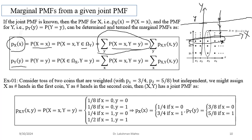Joint probability of events A and B can be computed via the multiplication rule: P(A∩B) = P(A)·P(B|A). In terms of random variables, event A corresponds to X observing value small x, and event B to Y observing value small y. The intersection is replaced by 'and' — so P(X=x, Y=y) = P(X=x)·P(Y=y|X=x).